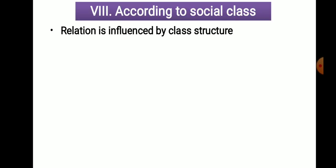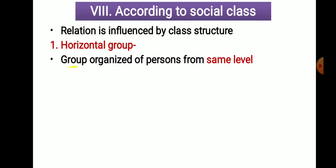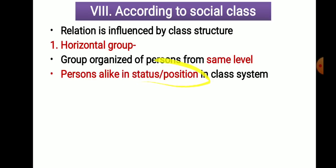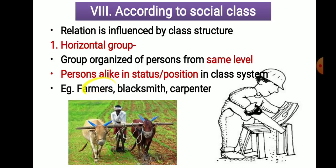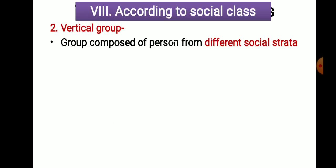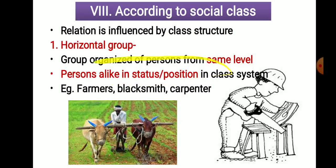The next classification is according to social class, which relates to the class structure — higher class, middle class, and lower class — as discussed in characteristics of society. Horizontal groups are groups organized by persons of the same level and same strata; persons are alike in status and position in society. Examples are farmers' groups, blacksmith groups, carpenter groups, groups of teachers, and groups of lawyers — all gathered at the same status level in society.